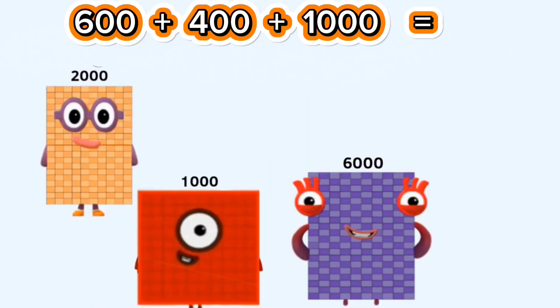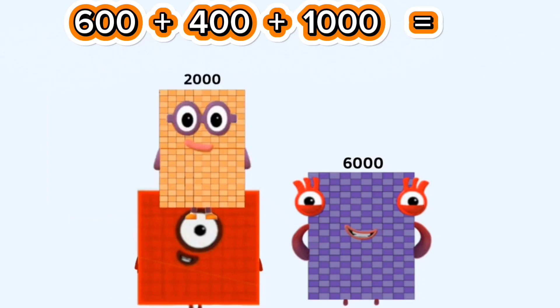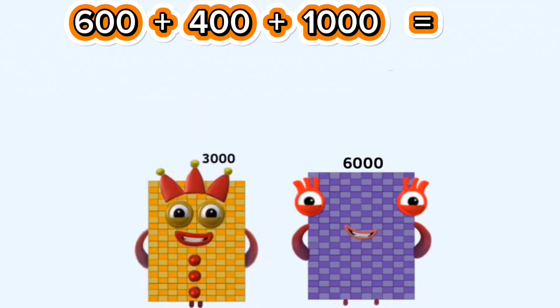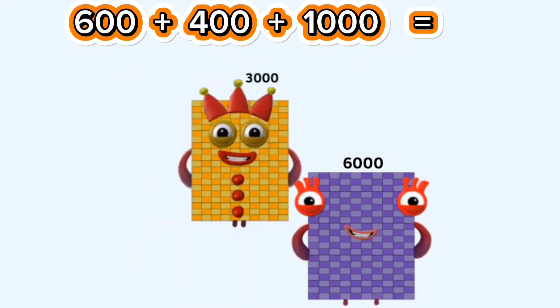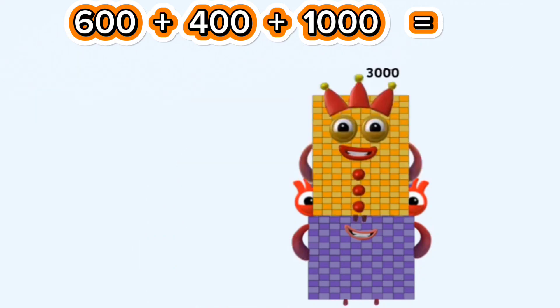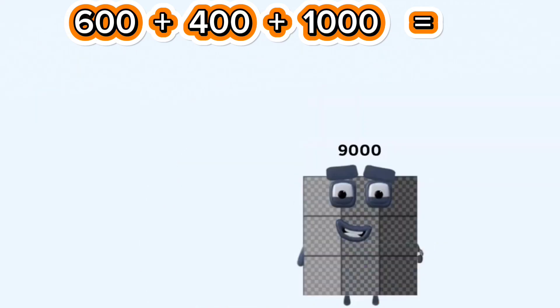Two thousand plus one thousand equals three thousand. Three thousand plus six thousand equals nine thousand.